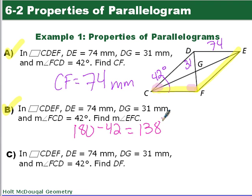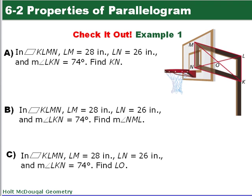Our last example, we have the same measurements. We want to find the length of DF. So diagonals bisect. So DF is going to be 31 plus 31 or 62 millimeters. Nice job. All right. So now it's your turn. Do the check it outs. You're going to find KN, angle NML, and LO.